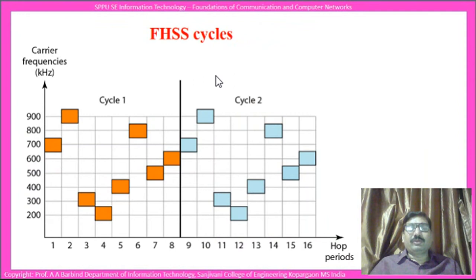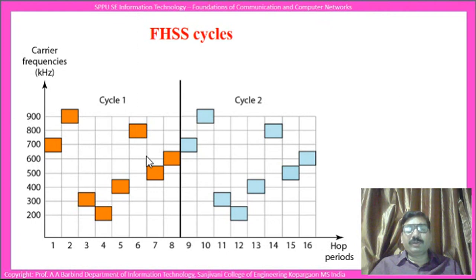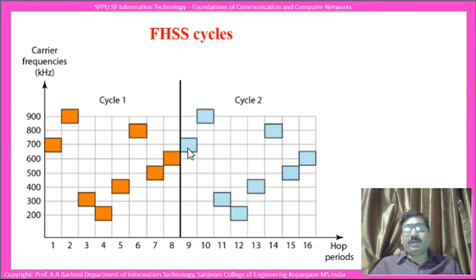In the first time slot the signal is modulated using 700 kilohertz, in the second time slot using 900 kilohertz, then 300, 200, 400, 800, 500, and 600 kilohertz. After one cycle is complete, the signal is again modulated with the carrier frequency of 700 kilohertz, and this changing of carrier frequencies continues as per the bit pattern selected by the pseudo-random generator.